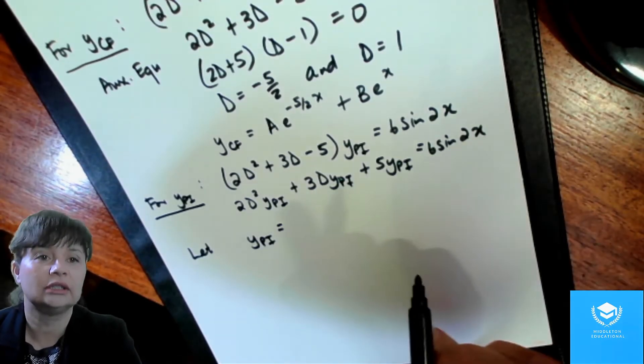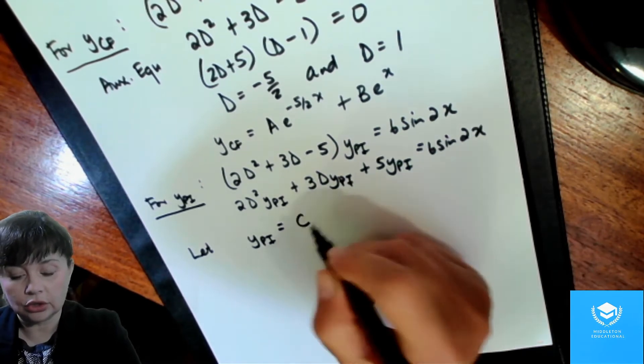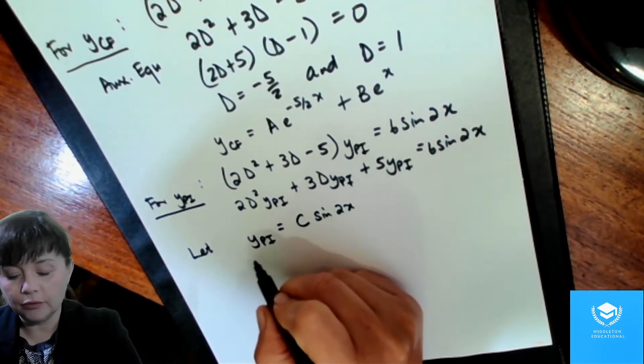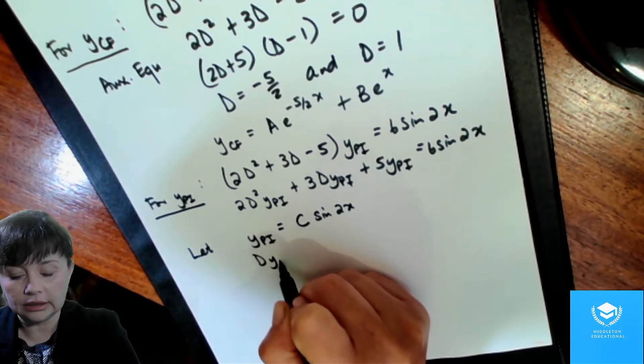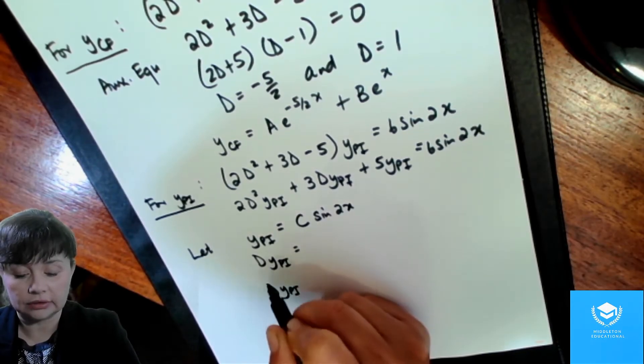So you know that when you substitute a value in your left-hand side, it has to simplify down to 6 sine 2x, which means at least one of your terms has to be sine 2x. So you don't know what the constant is. So you know one of the terms has to be sine 2x.